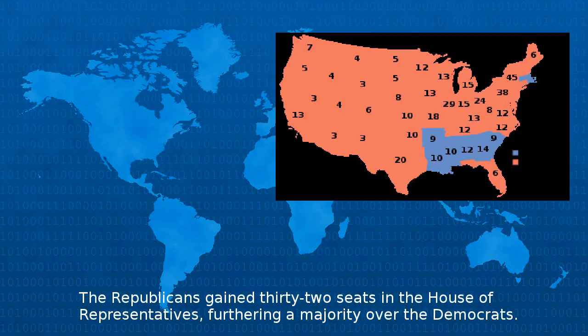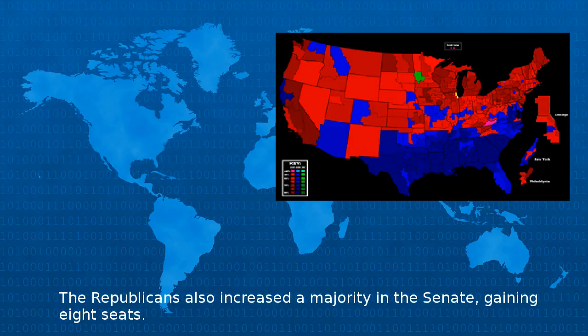The Republicans gained 32 seats in the House of Representatives, furthering a majority over the Democrats. The Republicans also increased their majority in the Senate, gaining eight seats.